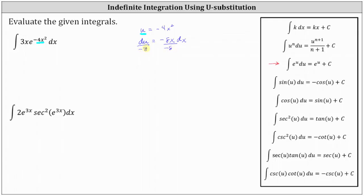We can factor out the 3. Simplifying, we have negative 1/8 du equals x dx. And now we can substitute negative 1/8 du for x dx. Bringing this in terms of u, again we'll factor out the 3, and x dx is equal to negative 1/8 du.